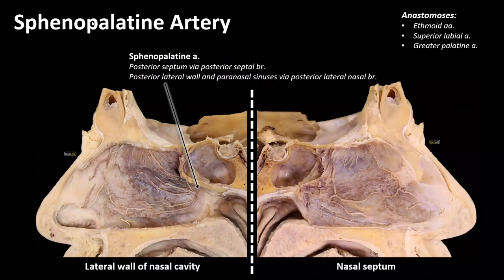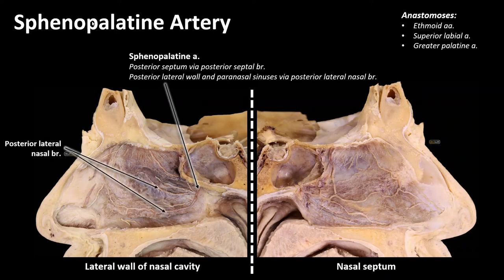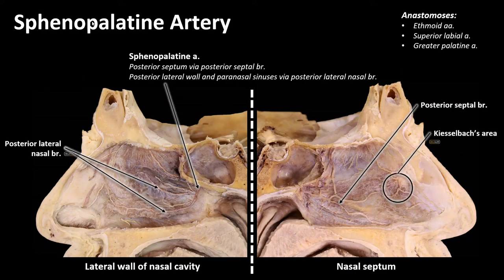The sphenopalatine artery will travel through the sphenopalatine foramen into the nasal cavity — this was covered extensively in the nasal cavity session, so I'll quickly review here. The sphenopalatine artery gives off the posterior lateral nasal branches, which supply the lateral wall of the nasal cavity, and the posterior septal branch, which supplies the posterior septum. That posterior septal branch participates in Kiesselbach's area, which is an area of anastomosis between branches of the ethmoid arteries, the superior labial artery, and the greater palatine artery.